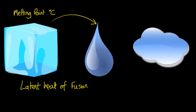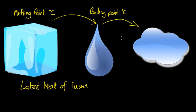When we've got the liquid and we heat up the liquid to its boiling point in degrees Celsius, then any further energy we put in is used to break the liquid bonds and form a gas. That energy that we put in to break those liquid bonds is the latent heat of vaporization.